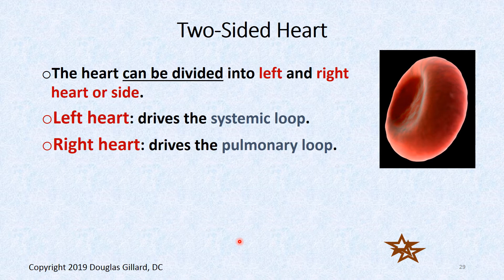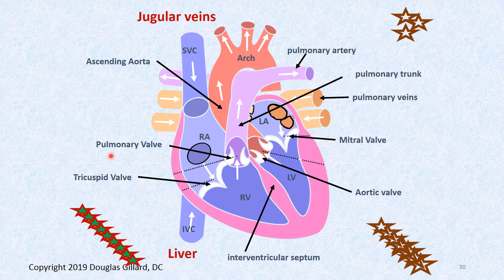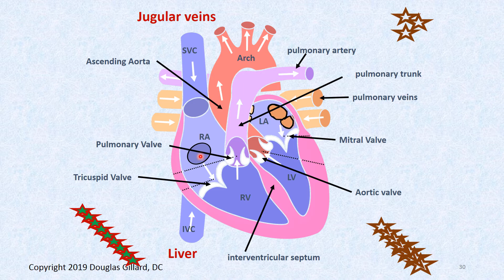The heart is a two-sided pump: the left heart drives the systemic loop; the right heart drives the pulmonary loop. You need to have these parts burned in your brain, because you'll be lost when I talk about mitral valve pathology, tricuspid valve stenosis, or regurgitation. Blood flow through the heart: the superior and inferior vena cava dump blood into the right atrium, along with the coronary sinus — that's the fossa ovalis region.